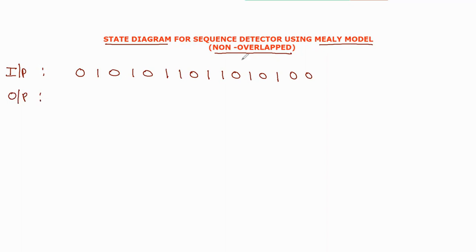The output sequence is: 1, 0, 1, 0, 1, 0, 0.